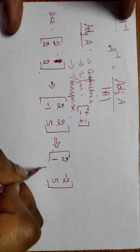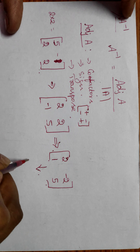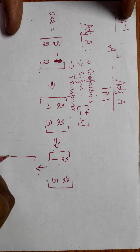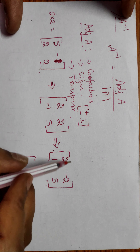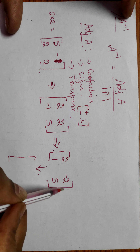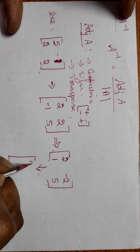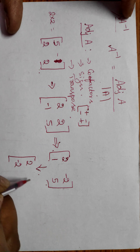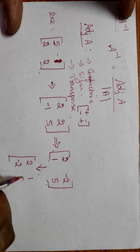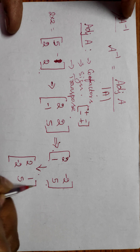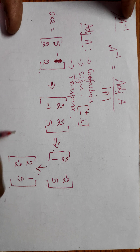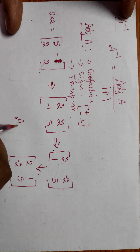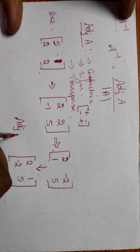In the transpose, this row is converted into a column and this row is converted into a column. So this is the adjoint of A.